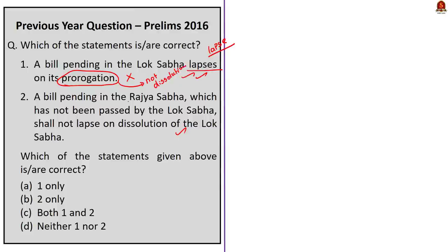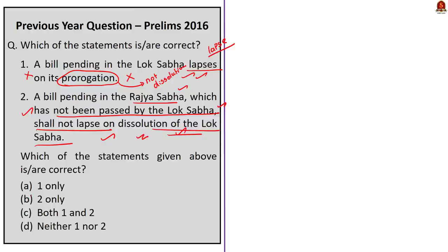Moving on to statement 2: 'A bill pending in Rajya Sabha which has not been passed by Lok Sabha shall not lapse on the dissolution of Lok Sabha.' This statement is correct because if a bill is pending in Rajya Sabha which is not passed by the Lok Sabha and if Lok Sabha is dissolved, then the bill will not lapse. So, statement 1 is incorrect and statement 2 is correct. The correct answer is option B, 2 only.